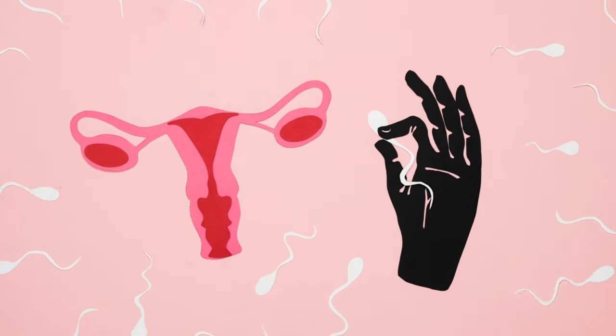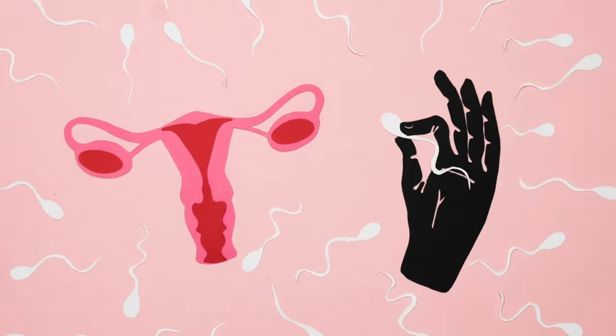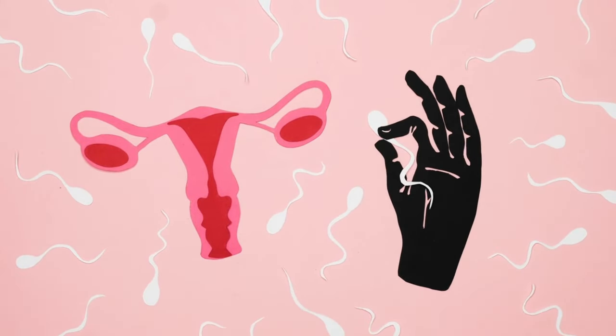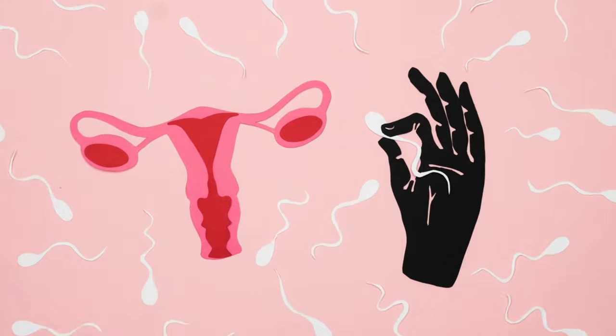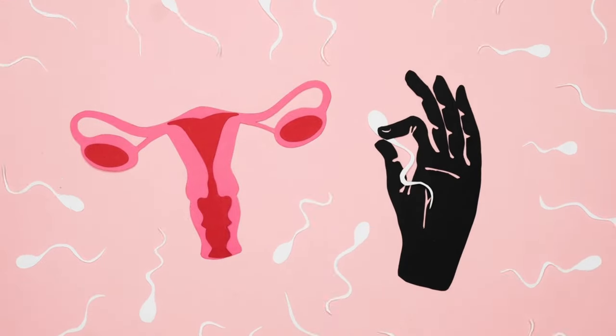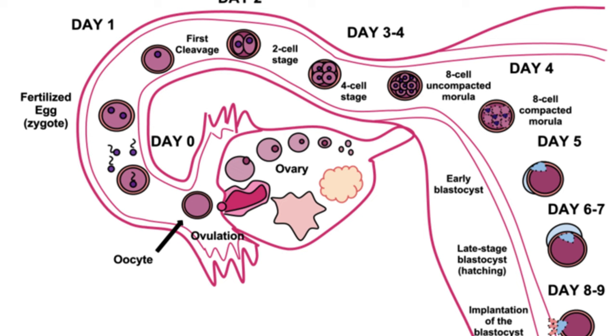This baby, called a zygote, is very small and cannot be seen with the naked eye. The mother will not know she is pregnant.